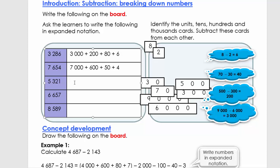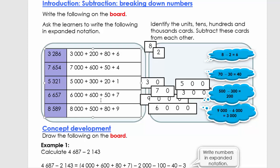Welcome back. The next one is 5,000 plus 300 plus 20 plus 1. The next one is 6,000 plus 600 plus 50 plus 7. And then the next one is 8,000 plus 500 plus 80 plus 9. Check yours — you can even check mine to see if I did it correctly. And then we're going to carry on.